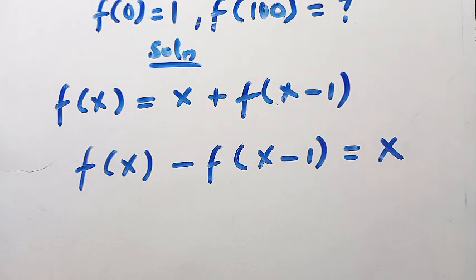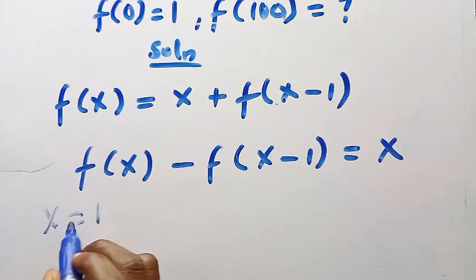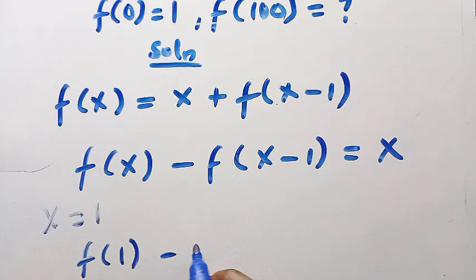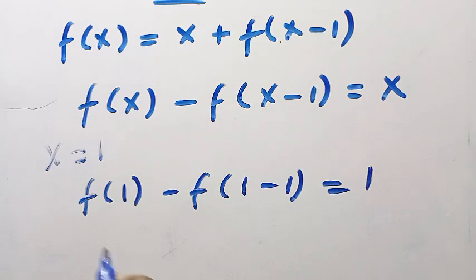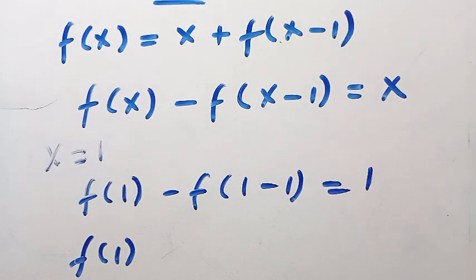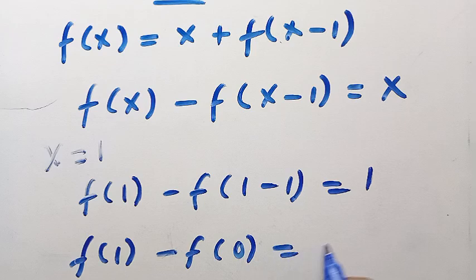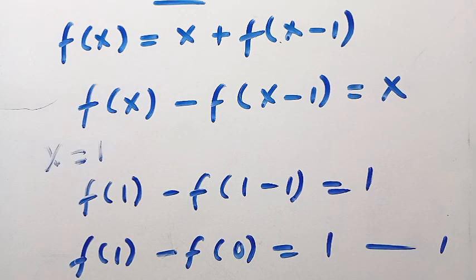First, suppose we have x = 1. We start from 1 because we have f(0) already. So if x = 1, we're going to have f(1) - f(1-1) = 1. We have f(1) - f(0) = 1. So we call this equation 1.